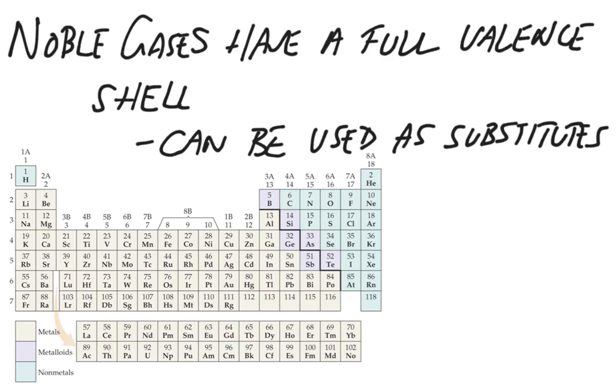Noble gases have a full valence shell. So because they have a full valence shell, what that means is that this group right here actually finishes off the row.